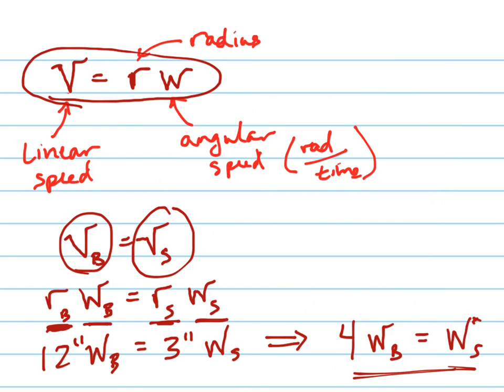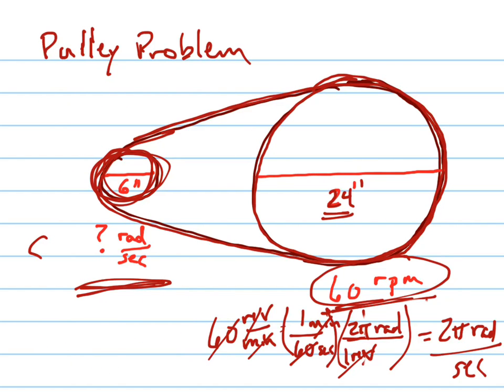And now, if you remember our conversion factor, that was this. So, that's 2 pi radians per second. And I have to multiply that by 4. So, that would be 8 pi. 8 pi radians per second is the angular speed of the small wheel.